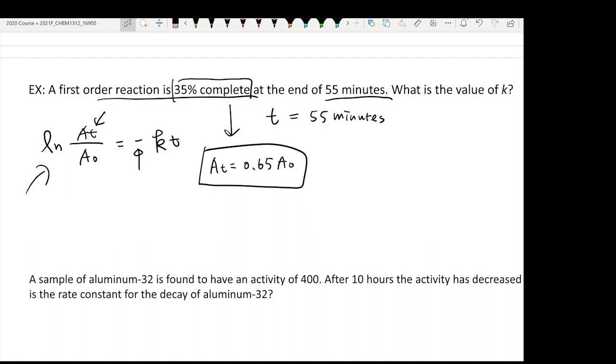Once you have this, you can put these things inside this equation. Your At is 0.65 A0, original concentration is A0, equals negative k times t is 55. So A0, A0 cancel out.